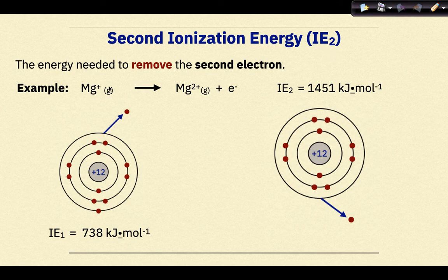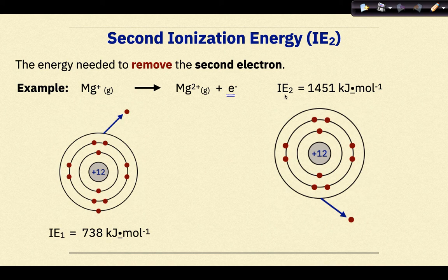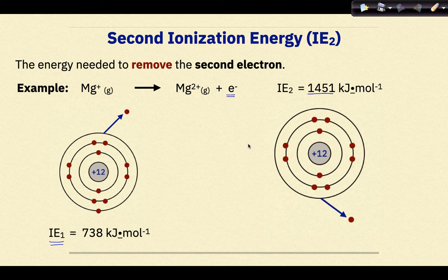The second ionization energy, IE2, is the energy to remove the second electron. For example, if we had a magnesium ion with a +1 charge — meaning the first valence electron had already been removed — the second valence electron is now being removed to produce Mg²⁺. The second ionization energy is 1451 kilojoules per mole, compared to the first ionization energy of only 738 kilojoules per mole. A pattern you will see is that it requires more ionization energy as electrons are removed from electron shells.